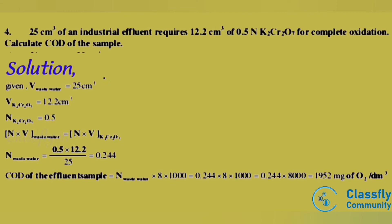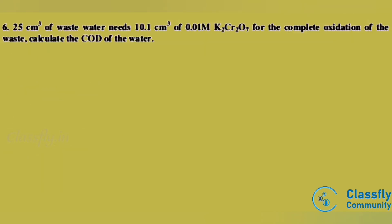Using the equation N × V (waste water) = N × V (K2Cr2O7), we get N(waste water) = 0.5 × 12.2 / 25 = 0.244. Therefore, COD of the effluent sample = N(waste water) × 8 × 1000 = 0.244 × 8 × 1000 = 1952 mg of oxygen per dm³.